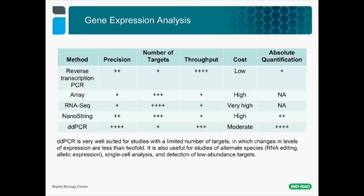In this comparison table of different methods for gene expression analysis, each method comes with specific pros and cons. Methods such as microarrays or RNA-seq allow study of a large number of targets and are fantastic discovery tools; however, their cost and throughput make them hard to use for large numbers of samples. While qRT-PCR has low cost and high throughput, it lacks precision and is not well suited for characterizing changes below twofold. ddPCR offers unparalleled sensitivity combined with high throughput and absolute quantification, making it extremely well suited for studies on a limited number of targets—up to four per well—on a large number of samples, as well as for single-cell transcriptomics and low-abundance targets.